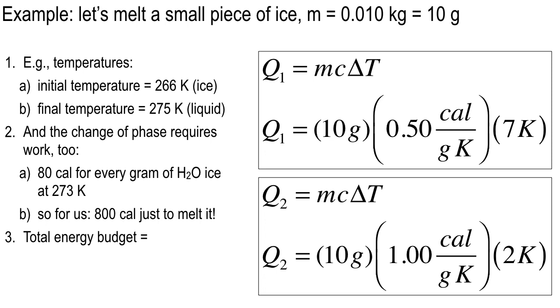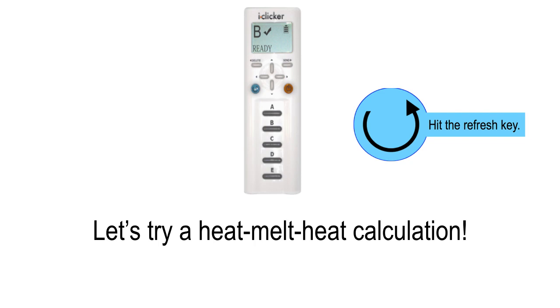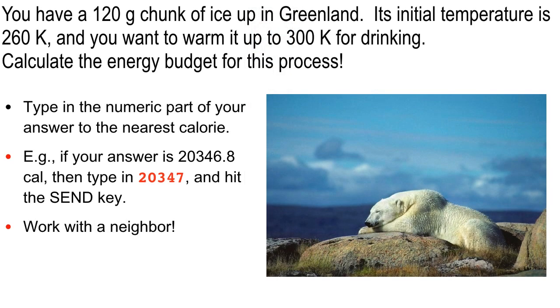So Q2 is still 10 grams of water. And then the middle parentheses, 1.00 calorie per gram kelvin. And why is that? Because now at 273, I've got liquid water. And then here's how far I'm raising the temperature. I'm just going up to 275. I could go up to 1,005 if I want. But for this one, 275 is all I want. And that works out to be, 10 times 1 is 10, 10 times 2 is 20. So I've got 35 from the first and 20 from the second. But notice, I haven't figured out the melting requirement yet. And that's the third thing that we have to do. For every gram of ice, H2O ice at 273, I've got to bust that thing up into liquid. And that's going to require 80 calories for every gram. For us, that's going to be 800 more calories.